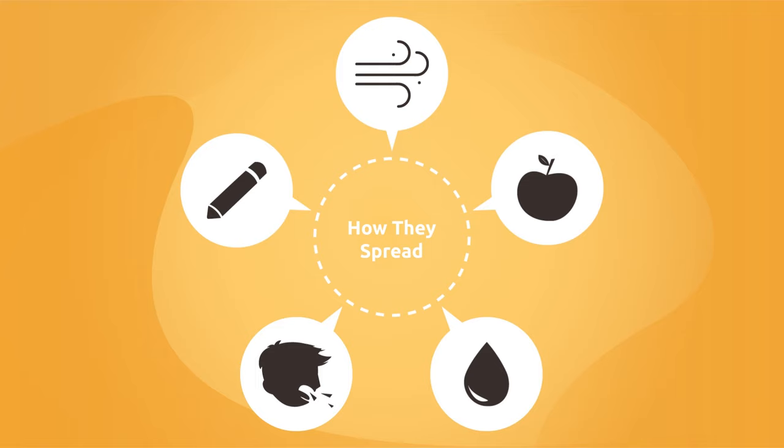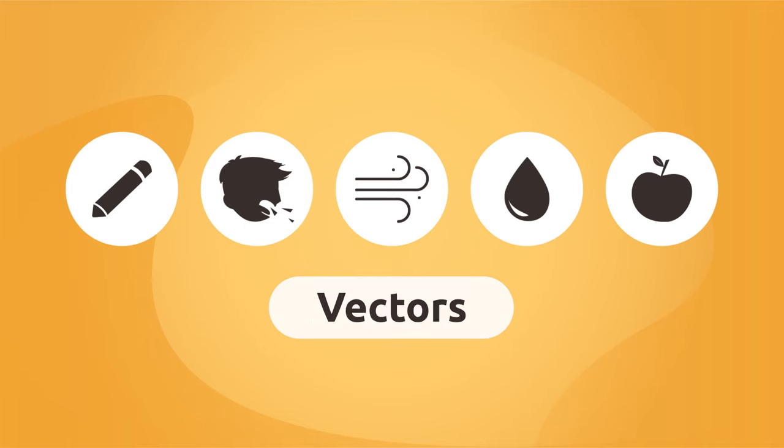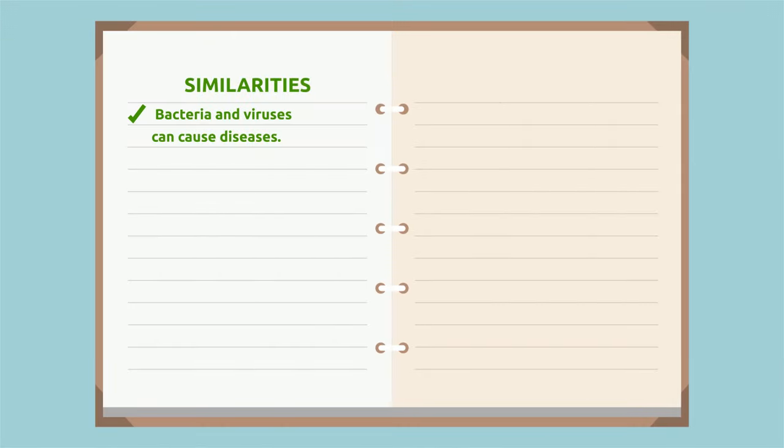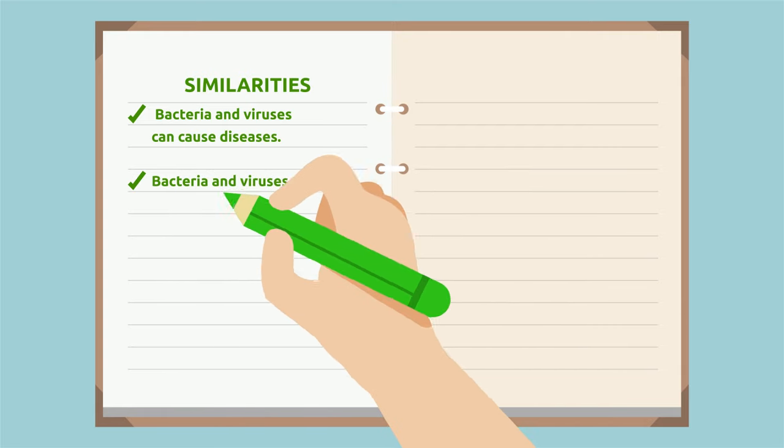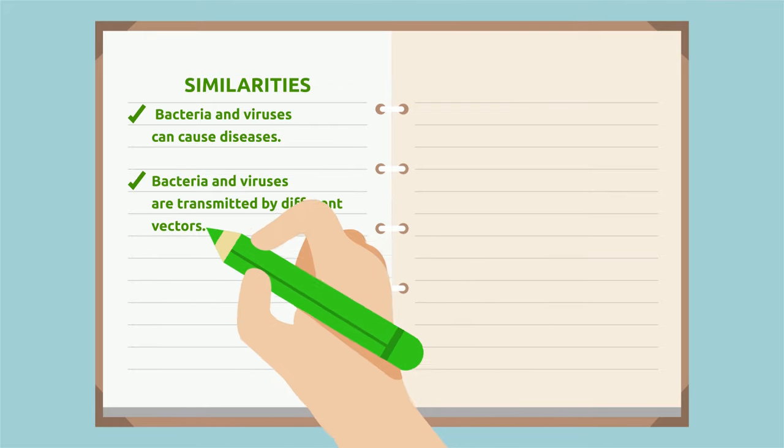The elements through which viruses and bacteria are transmitted are called vectors. Second similarity to write down in our notebook: bacteria and viruses are transmitted by different vectors.